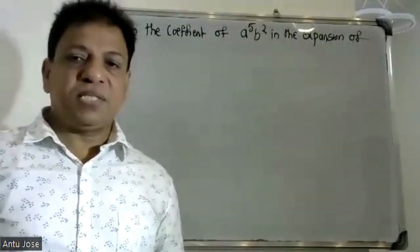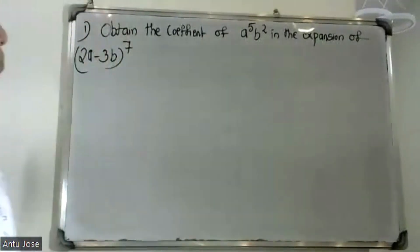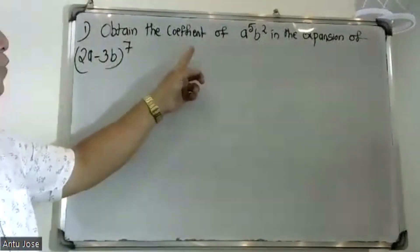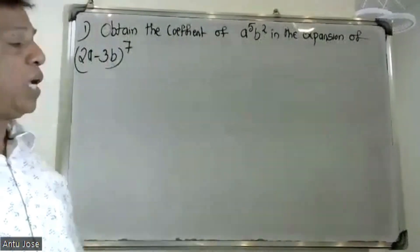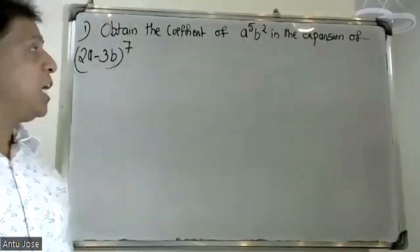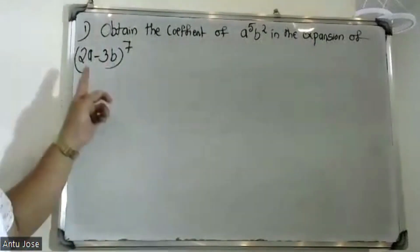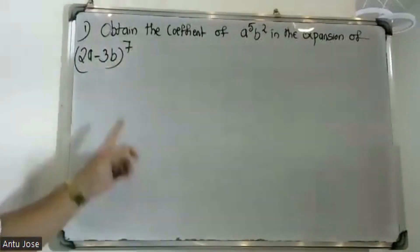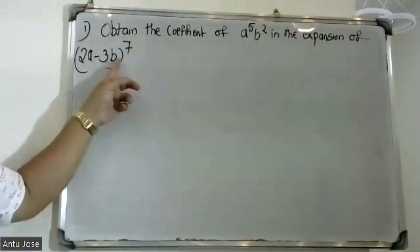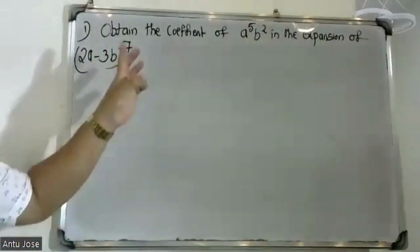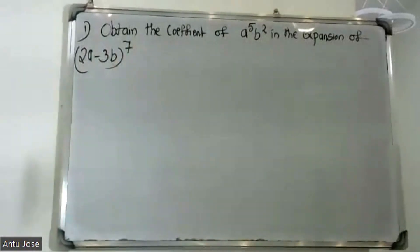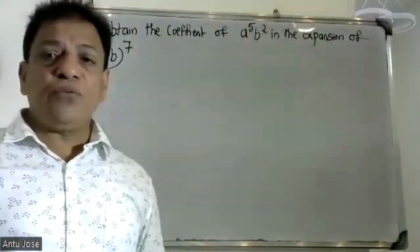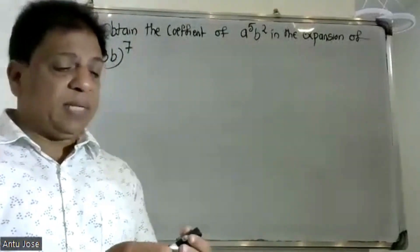Good morning students. Obtain the coefficient of a raised to 5 b squared in the expansion of 2a minus 3b raised to 7. We will use the binomial theorem to find the coefficient.